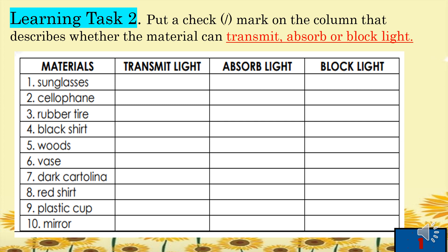Here are the answers for Learning Task 2: Sunglasses — transmit light. Cellophane — transmit light. Rubber tire — block light. Black shirt — absorb light. Wood — absorb light. Dark cartolina — absorb light. Red shirt — absorb light. Plastic cup — transmit light. Mirror — transmit light.